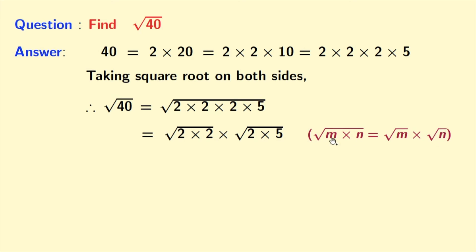Here m is 2 times 2 and n is 2 times 5. Now from the first square root we will take 2, as we know that square root of a times a is equal to a. Here a is 2, and inside the second square root we have no